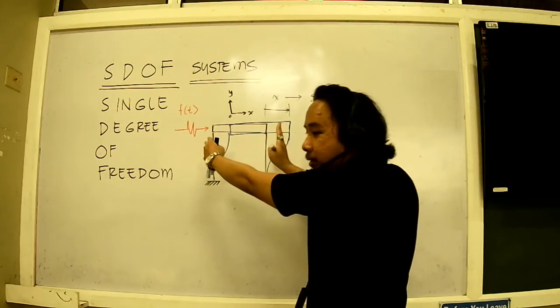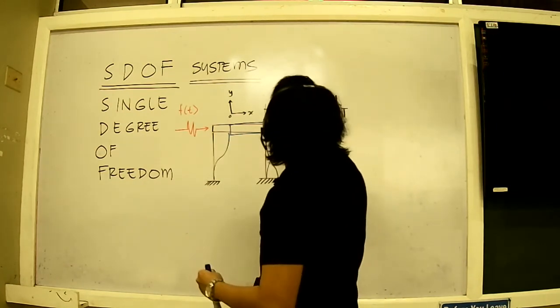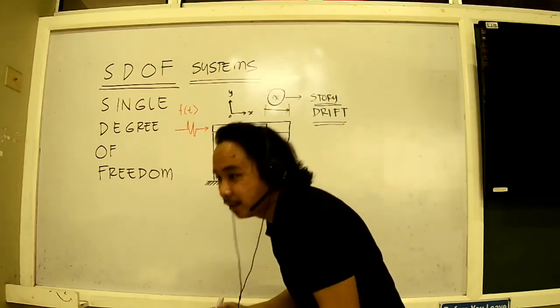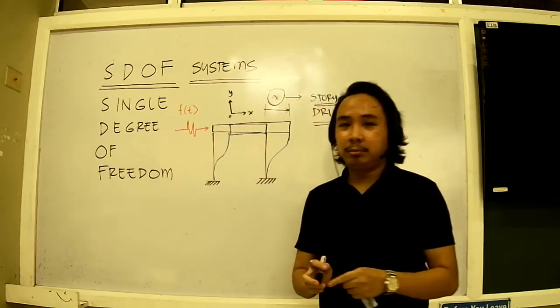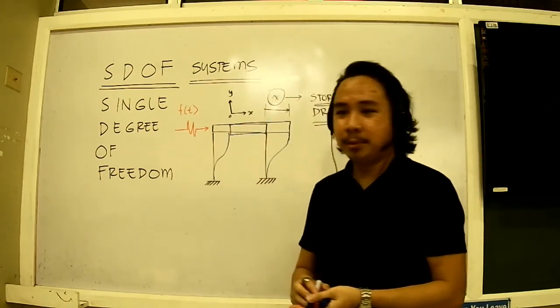which is the deformation from here to here, designated by the term X. So we will be discussing single degree of freedom systems